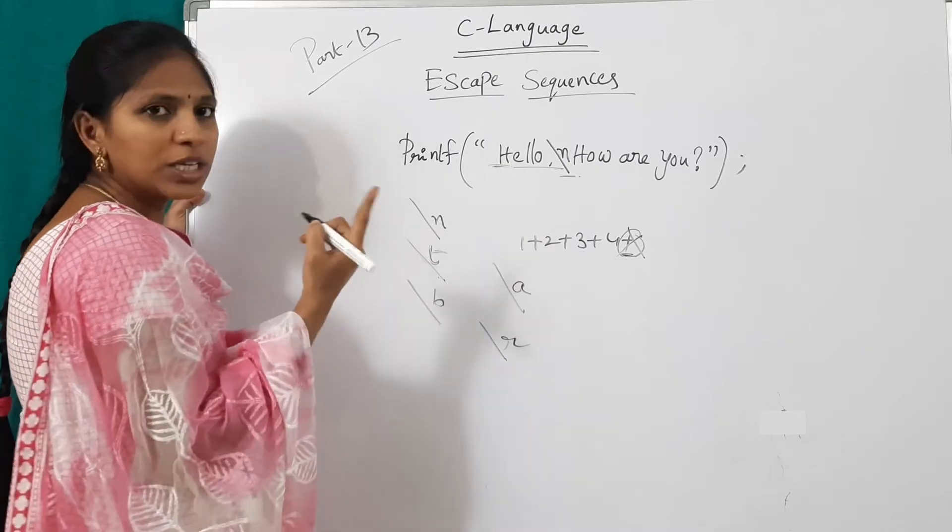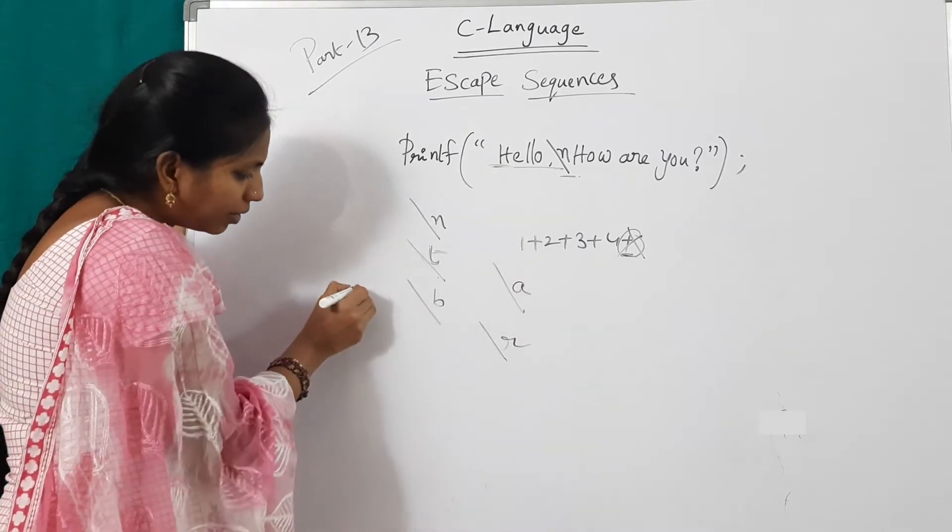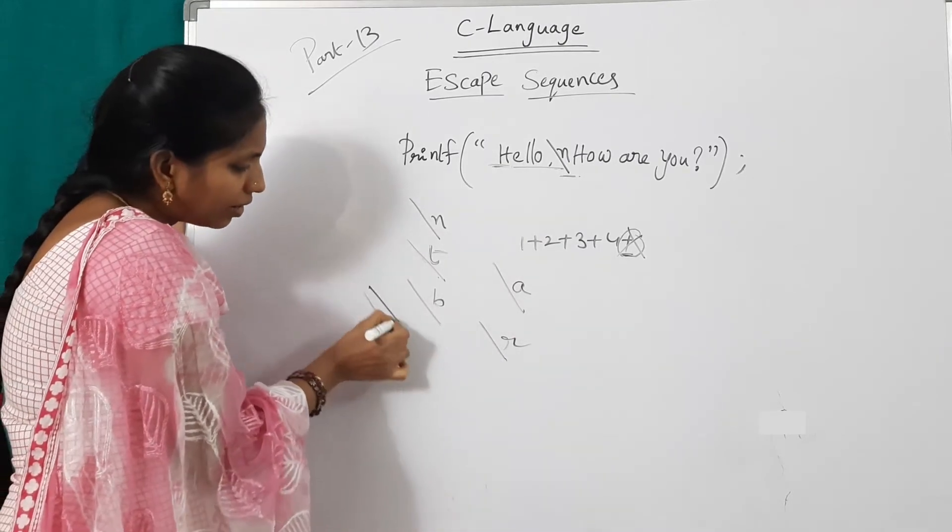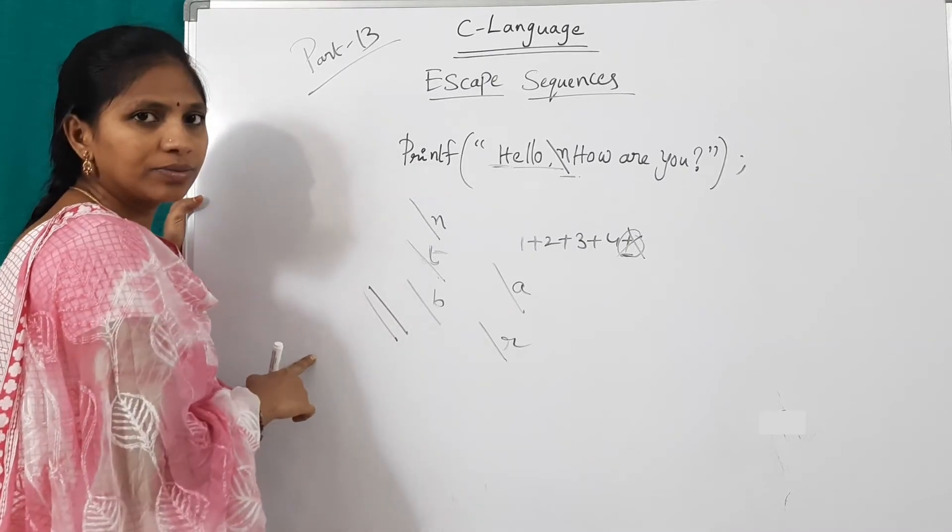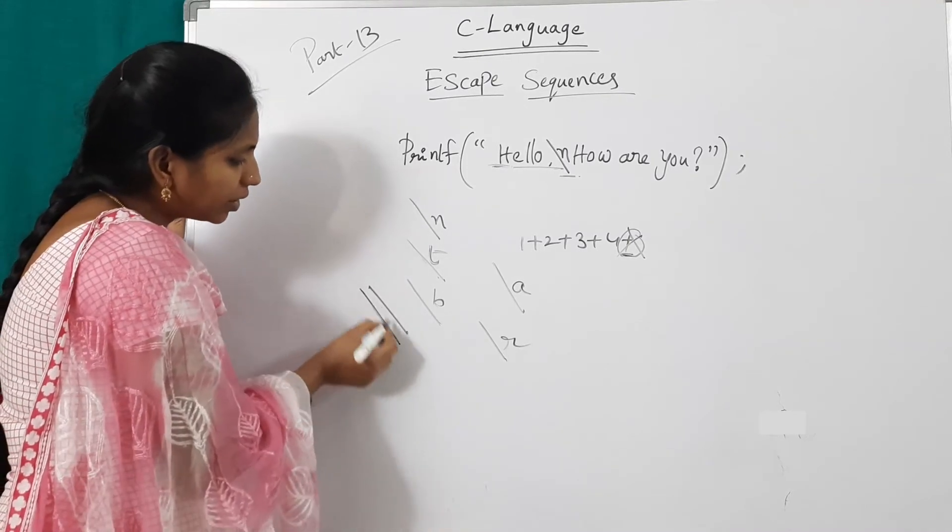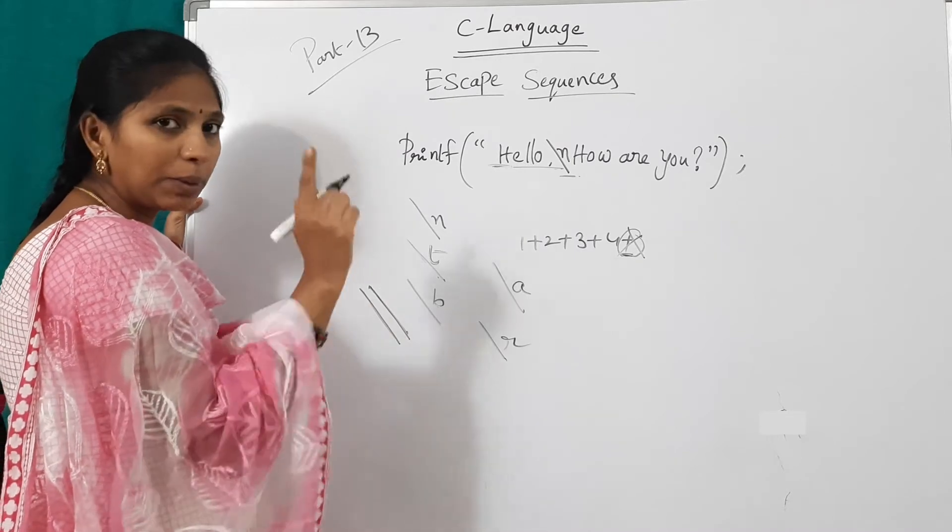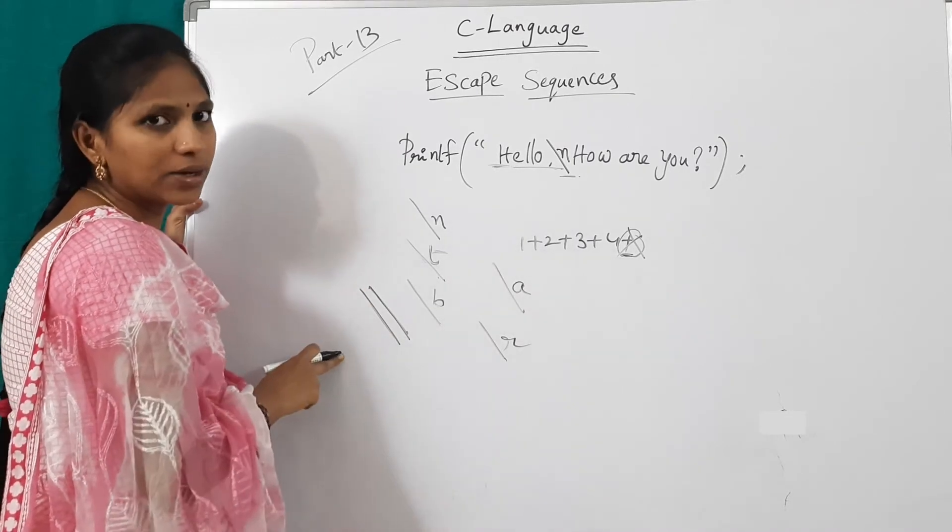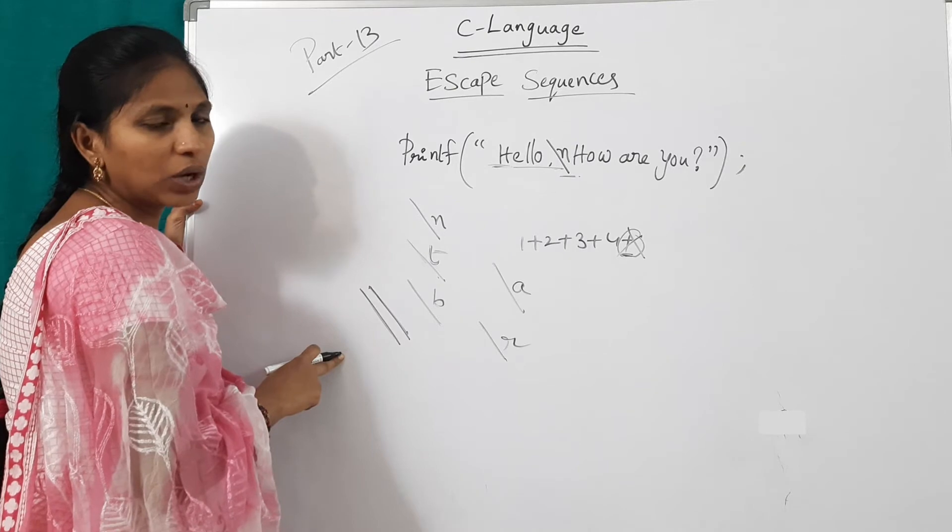And to display slash at result screen, backward slash. Again write a backward slash. This is for escape character and this is to print. It will print one backward slash at result screen.